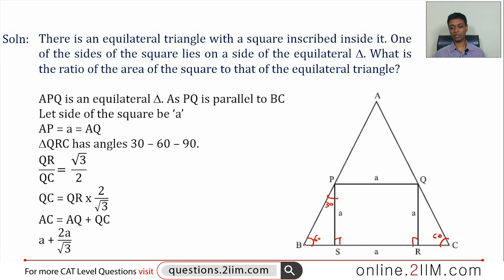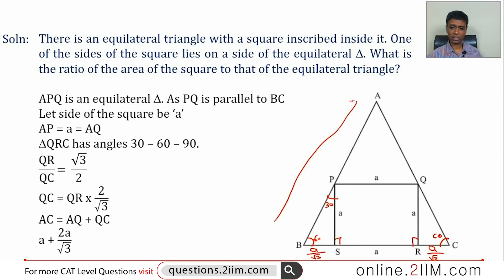Using trigonometry: tan(60°) = PS / BS, which gives √3, so PS = a/√3. By symmetry the other side RC is also a/√3. Therefore, the side of the equilateral triangle in terms of a is: a + a/√3 + a/√3.